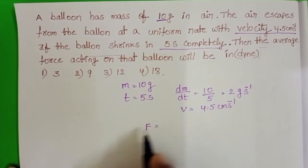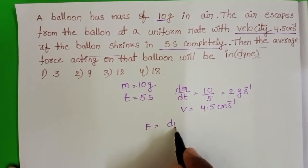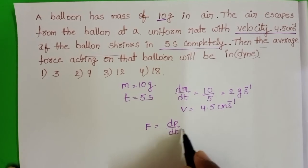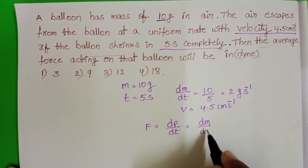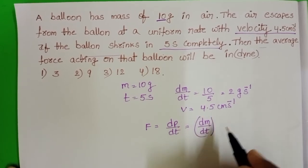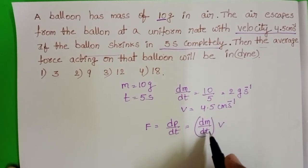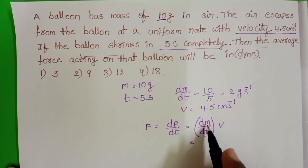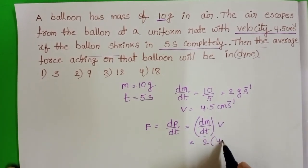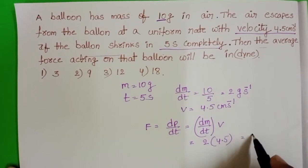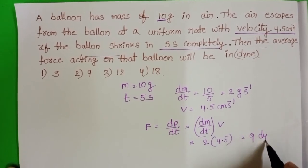Average force acting on the balloon is equals to rate of change of momentum. In place of momentum, mass into velocity. Here mass is variable, dm/dt into V. In place of dm/dt, take 2 and V is 4.5, that is equals to 9 dynes.